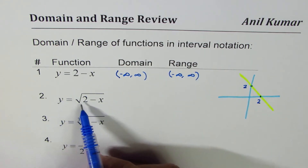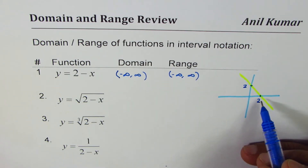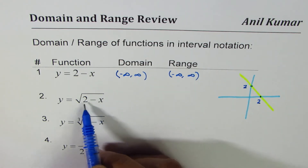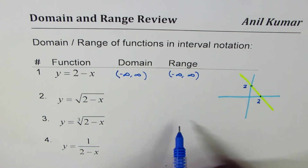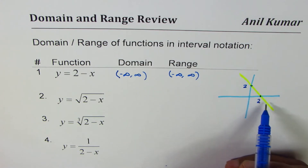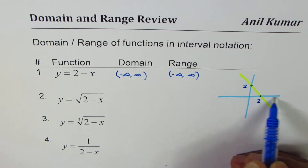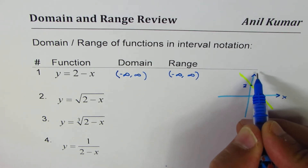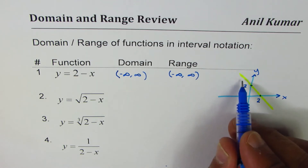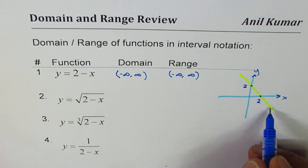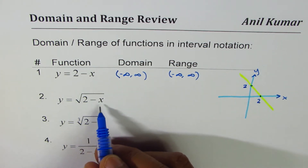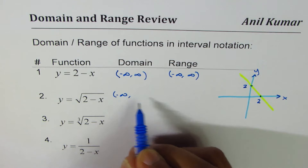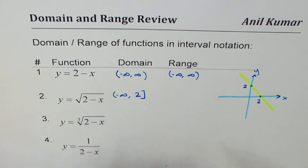Now let's look at the second function, y = √(2 - x). As you know, square root requires the expression inside to be non-negative, so 2 - x must be greater than or equal to 0. As x becomes greater than 2, the value of 2 - x becomes negative. Therefore, the domain of the square root function is restricted to the left side of 2, from -∞ to 2, where 2 is included.